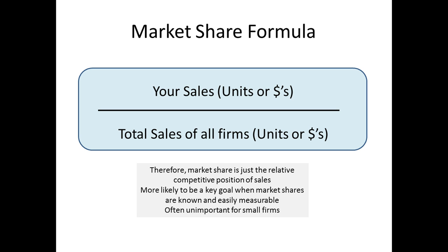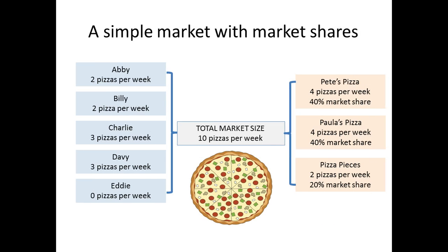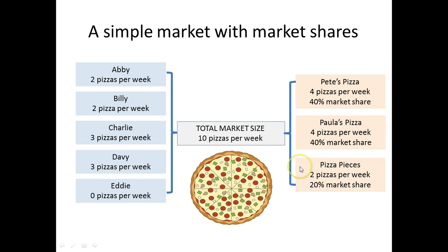Market share is simply your brand sales over all the sales in the marketplace, and we use this as a guide to competitive position. In our simple example, we're looking at a small town where there are three different pizza stores and five consumers in the marketplace. They buy a total of ten pizzas. One consumer doesn't buy any pizzas. The first store gets four sales — 40% of ten. The second one also gets four sales, and the last one gets just two sales.